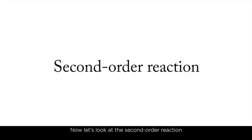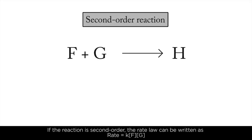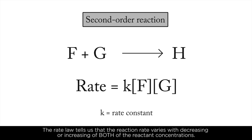Now let's look at the second-order reaction. If the reaction is second order, the rate law can be written as rate equals K times concentration of F times concentration of G. The rate law tells us that the reaction rate varies with decreasing or increasing of both of the reactant concentrations.